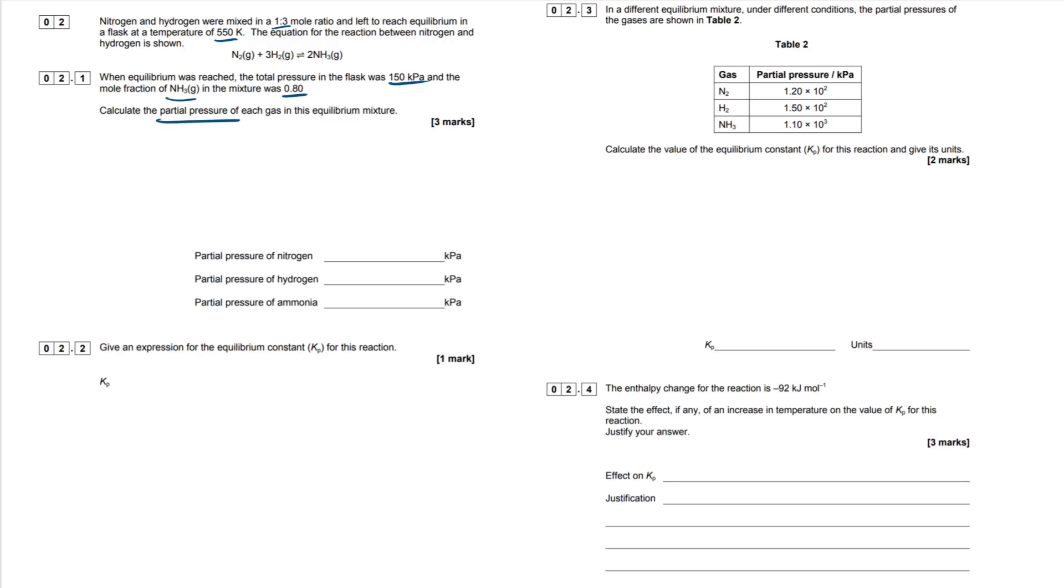What do we have to do then? We have to calculate the partial pressure of each gas in the equilibrium mixture. So they haven't given us much work space here, but essentially what we can do is you can think of the mole fraction. Where's the mole fraction gone again? 0.8. You can think of a mole fraction, which is just given our lambda symbol here as 1. It's a fraction out of 1, one whole thing.